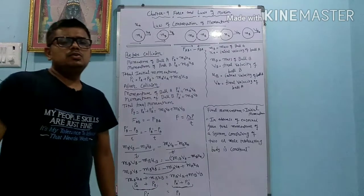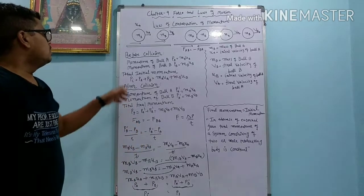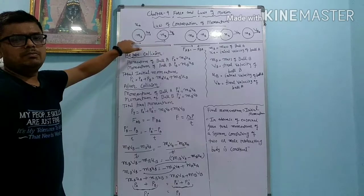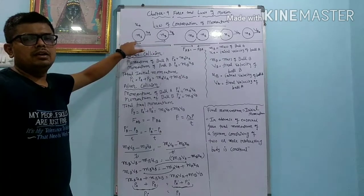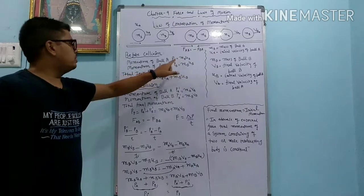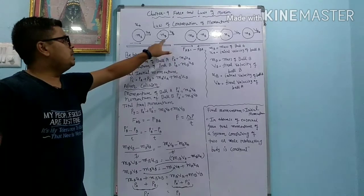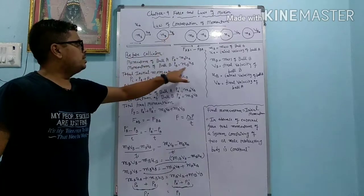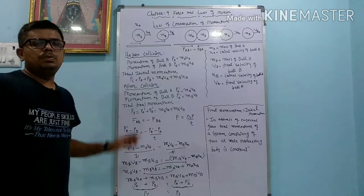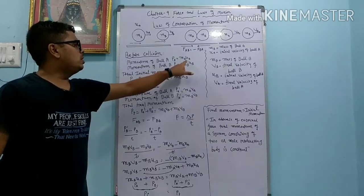Dear students, here we will find the momentum before collision and after collision. Momentum of ball A: PA equals to MA into UA. Momentum of ball B: PB equals to MB into UB. So total initial momentum equals to PI equals to PA plus PB, equals to MA·UA plus MB·UB.